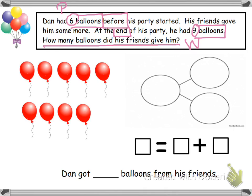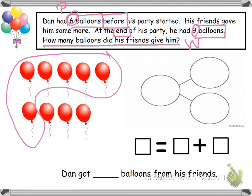Well, let's circle the part that the word problem tells us. What is the part that the word problem tells us? I labeled my part with a P, which is six. Six was the part that it told us. So I circle six balloons — one, two, three, four, five, six.